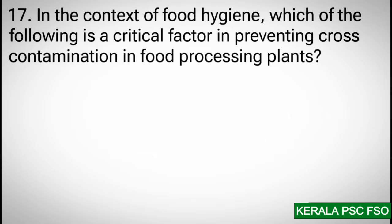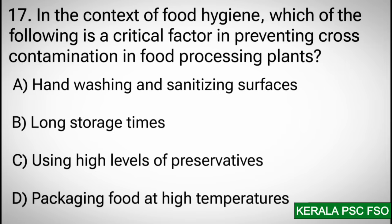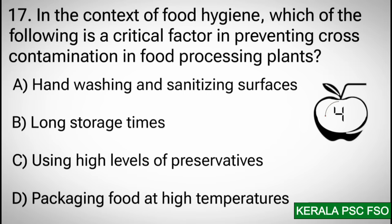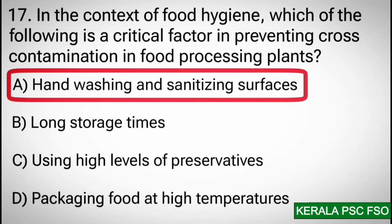Question 17: In the context of food hygiene, which of the following is a crucial factor in preventing cross-contamination in food processing plants? Options: a) hand washing and sanitizing surfaces, b) long storage times, c) using high levels of preservatives, d) packaging food at high temperatures. Correct answer: a) hand washing and sanitizing surfaces.